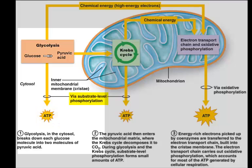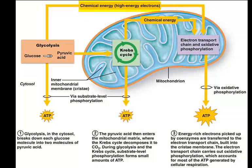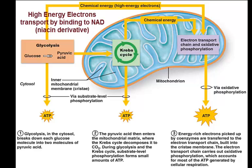That ATP is generated at the substrate level — this is called substrate-level phosphorylation. Glycolysis also produces chemical energy in the form of high-energy electrons. Those high-energy electrons are transported from the cytosol into the mitochondria on the backs of hydrogen ions, which are carried by the carrier molecule NAD.